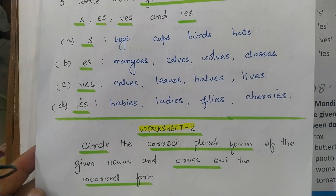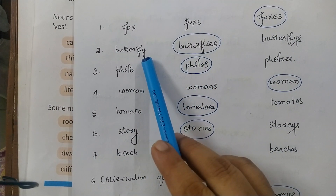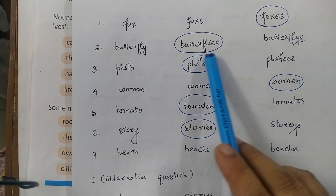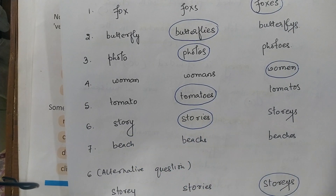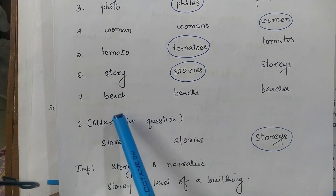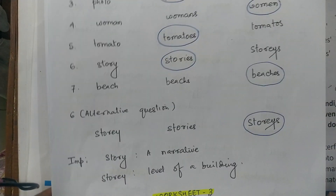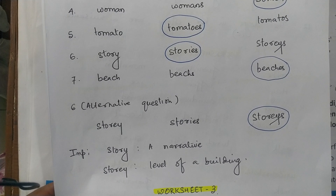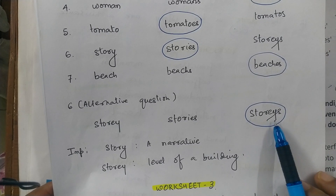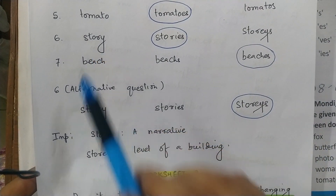Worksheet 2. Circle the correct plural form of the given nouns and cross out the incorrect ones. Fox becomes foxes. Butterfly becomes butterflies because it ends with Y preceded by consonant L, so Y becomes IES. Photo becomes photos. Woman becomes women. Tomato becomes tomatoes. Story becomes stories. Beach becomes beaches — please circle this. Note: S-T-O-R-Y means a story or narrative and its plural is stories, while S-T-O-R-E-Y means a floor of a building and its plural is storeys. Please check the spelling before writing the plural.